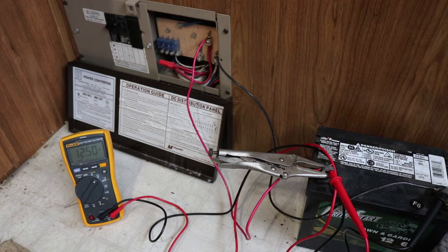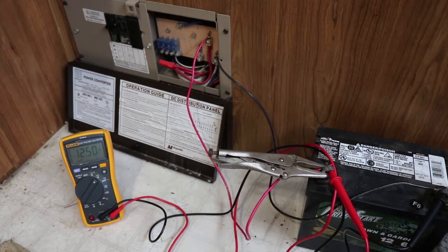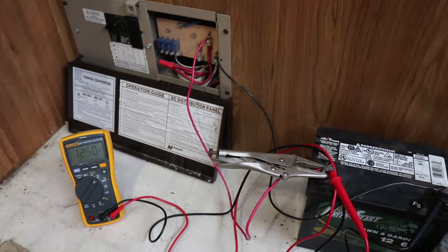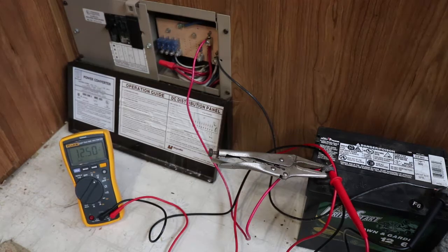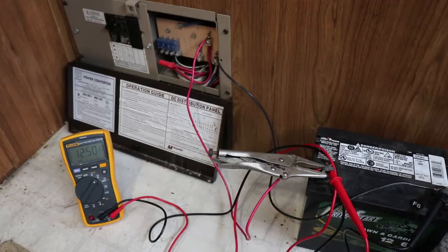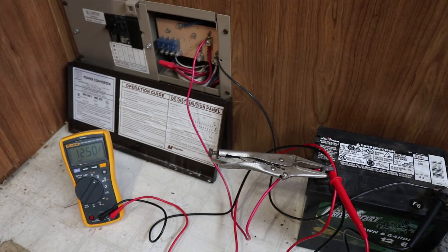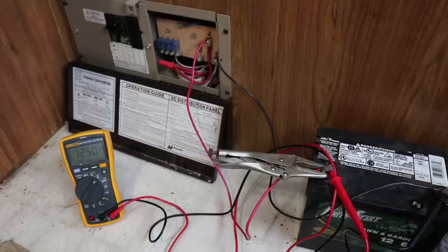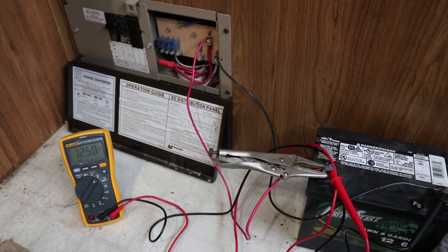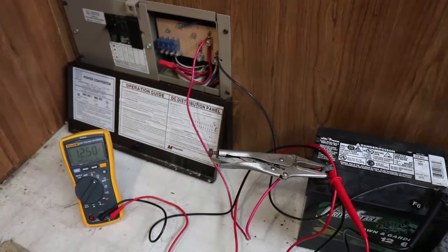Alright folks, so we're all set up here to test our 12 volt power converter in the camper. This system turns shore power 120 volt into 12 volt power that many of the things in the camper can use like lights, furnace, or fans because most of those run off 12 volt battery power. This camper doesn't have its own battery.